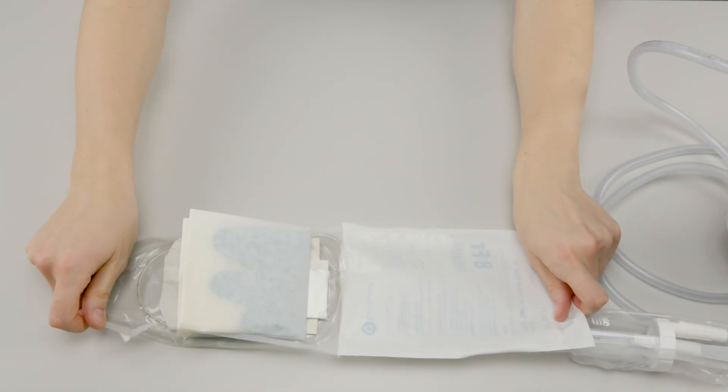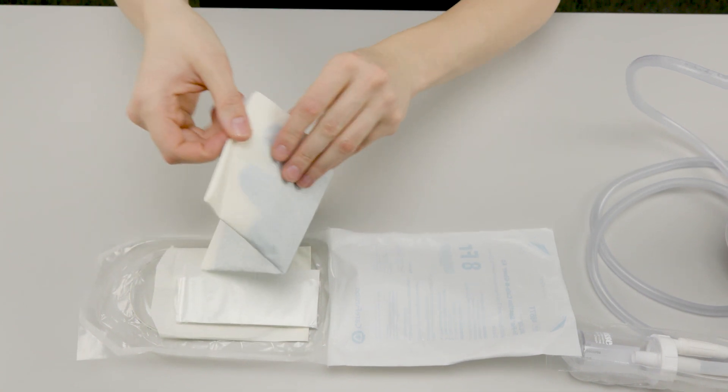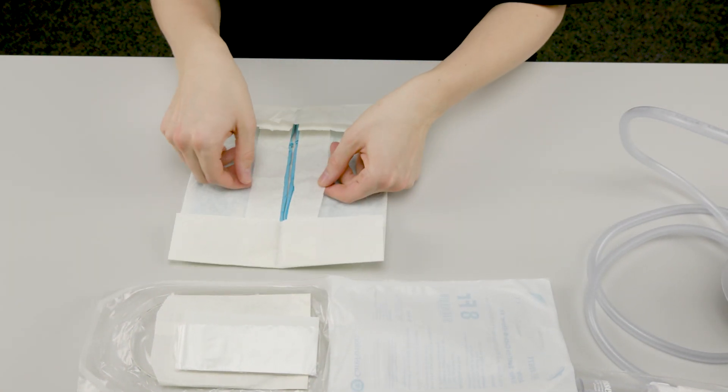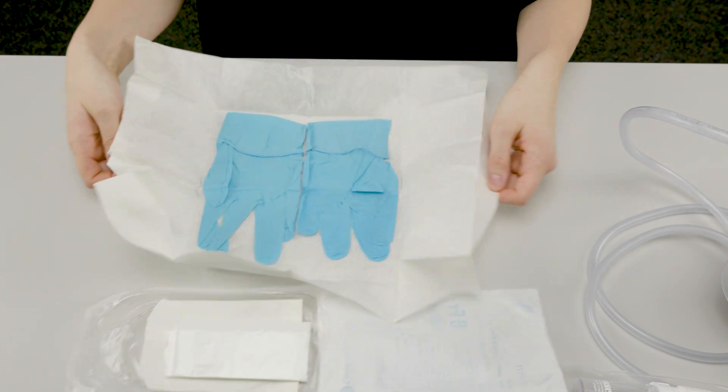When collecting a sample of bronchial secretions from a trach, always use sterile suction technique, even if the patient is normally suctioned using non-sterile technique.